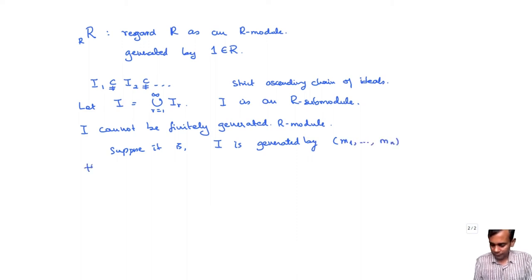Then there exists a large number capital N such that M_i belongs to I_n for all i equals 1 to n. Because each M_i belongs to some I_r and then it belongs to all the I_s's for s greater than r. So beyond some point, each M_i belongs to some I_r and all the I_r's that come after it. And just take the largest of these numbers and all the M_i's will belong to one of the ideals I_n.